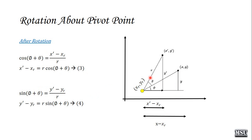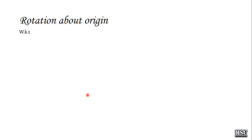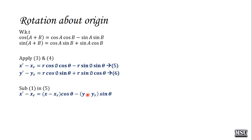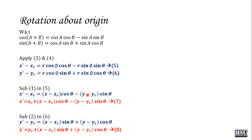Substituting r cos phi = (x − xr) and r sin phi = (y − yr), we identify the new formula for x dash and y dash. Equation 7: x dash = xr + (x − xr) cos theta − (y − yr) sin theta. Equation 8: y dash = yr + (x − xr) sin theta + (y − yr) cos theta. These equations indicate rotation about a pivot point.